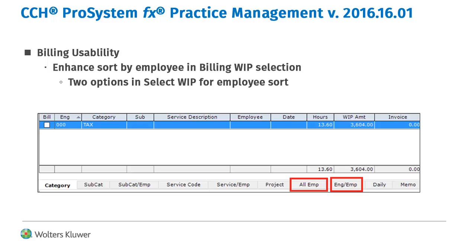When selecting the WIP to bill, the buttons at the bottom of the WIP grid group and sort WIP transactions. Previously there was an option to summarize all employees for all engagements, and that option is available again in this release.